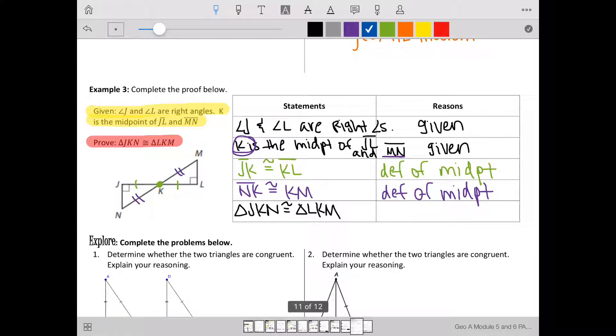Now that we have two right triangles with a matching hypotenuse and leg, we know that these two triangles are congruent because of the HL theorem.